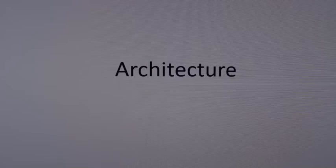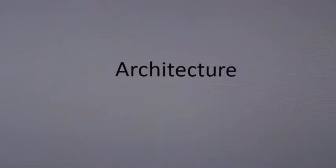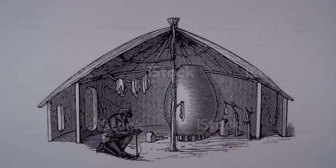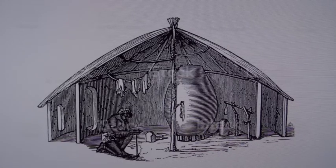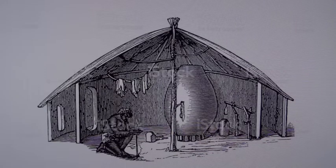When humans were in their very early stages of development, as many of you already know, they were nomadic. They were hunter-gatherers. We don't really consider what they're doing architecture, although it has been termed the architecture of shelter. It was structures that were easily put together and easily taken apart. Sometimes they even took them with them. Think of the Plains Indians in North America — lean-to structures, teepee structures, round huts.